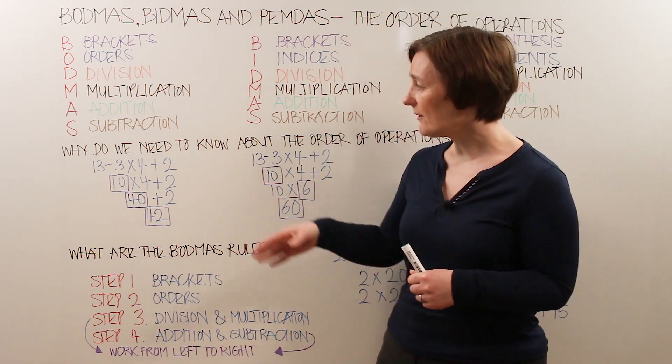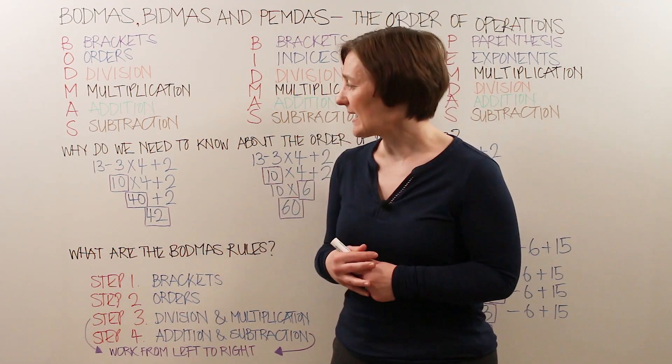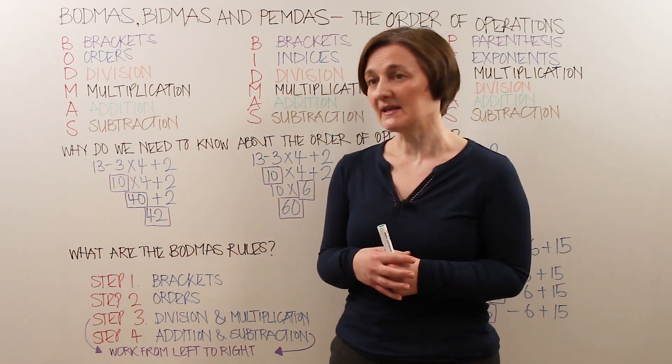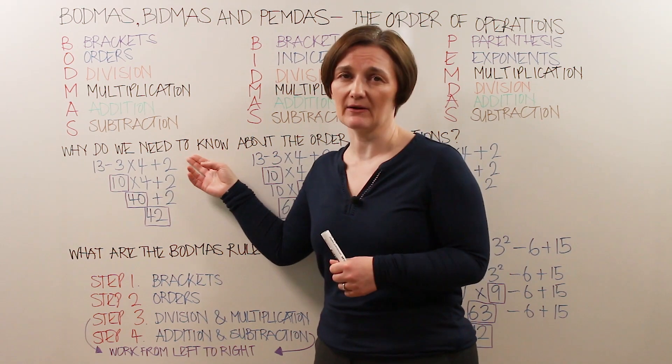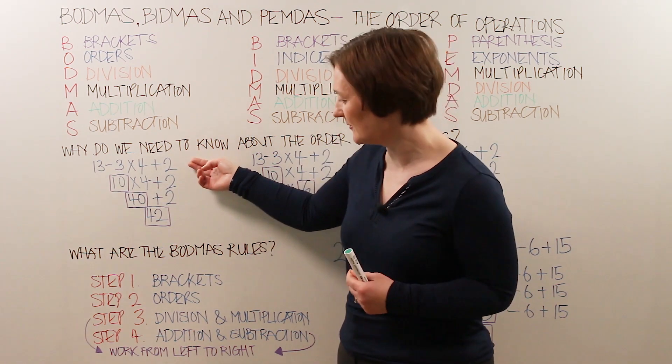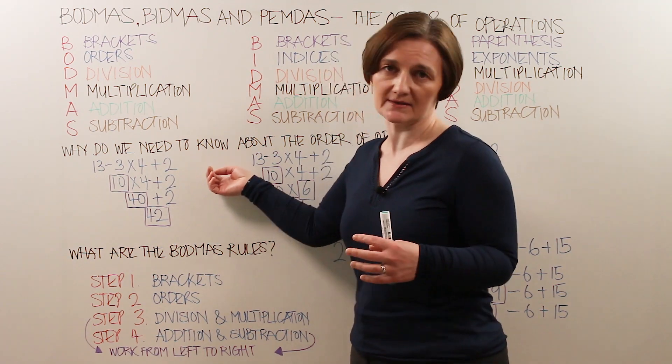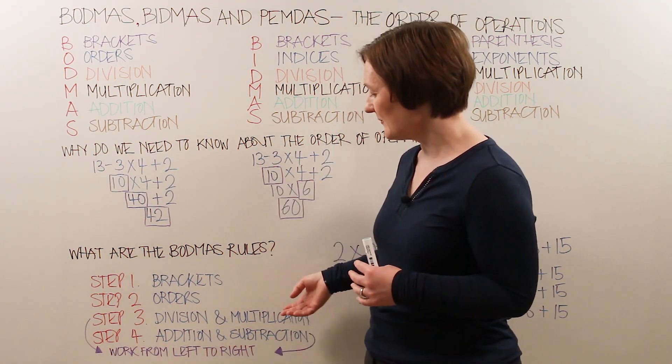So back to our initial problem, let's apply the BODMAS rules to calculate the correct answer. So step 1, B is for brackets. Well there is no brackets in our calculation, so we can move straight to step 2. Step 2 is orders. Well we have no squares, cubes or any other powers. So we can move to step 3, which is division and multiplication.